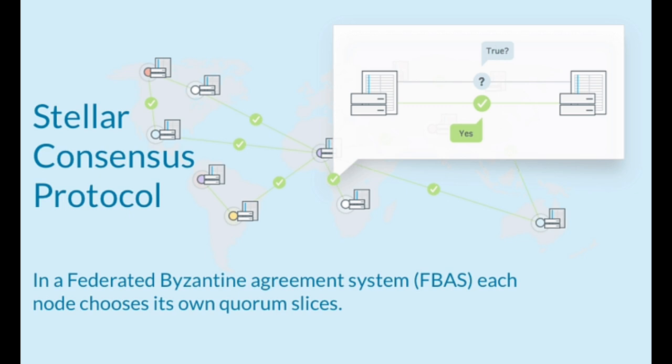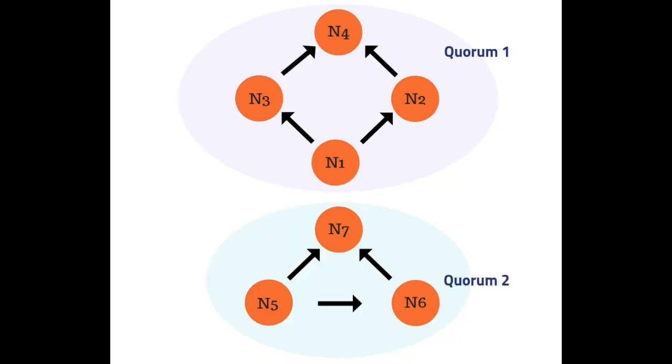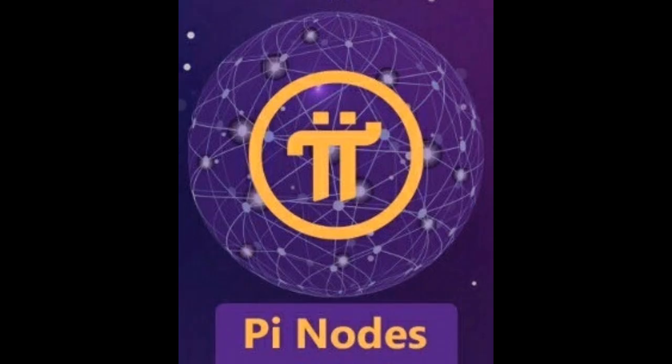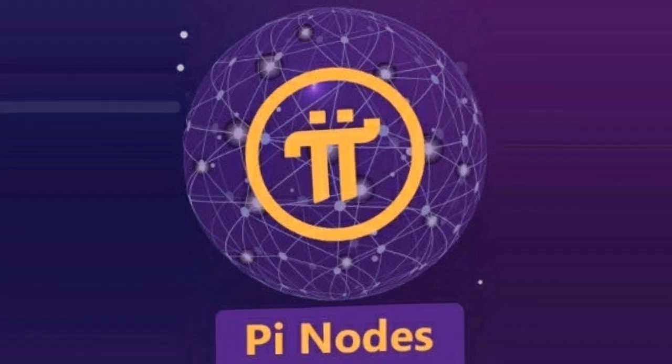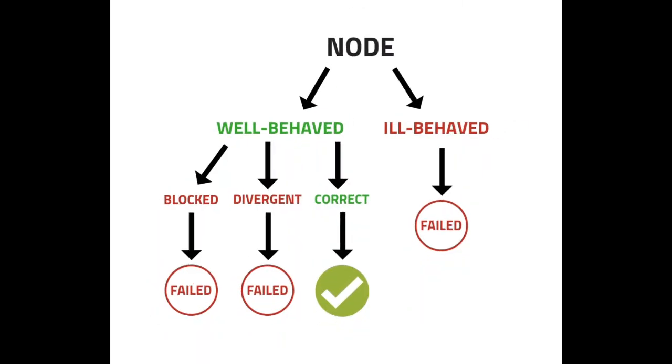The Federated Byzantine Agreement, also known as the FBA, allows there to not only be one central quorum that acts as validators in the network. It allows each node to set their own quorum slice, which forms different quorums. Then, future nodes are brought into the network based on trusted nodes that validate and declare that node can be trusted. This system doesn't require a central quorum, and this is how PI Network's blockchain establishes and builds its security.